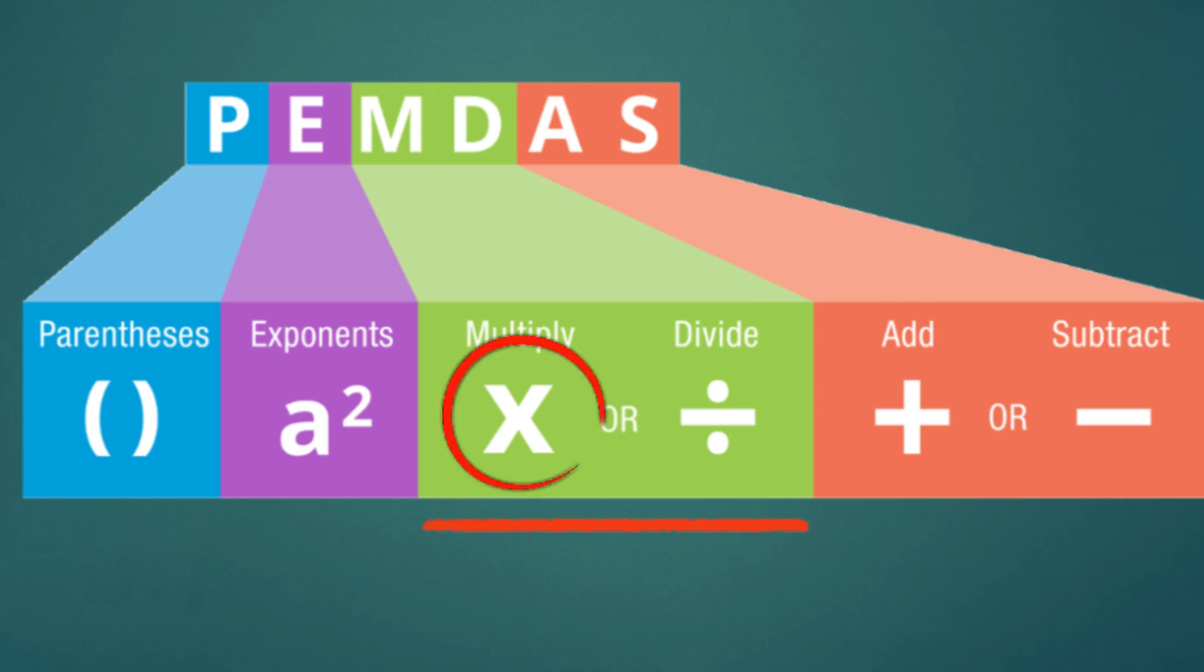Remember, multiplication and division have equal priority, so we always go from left to right.